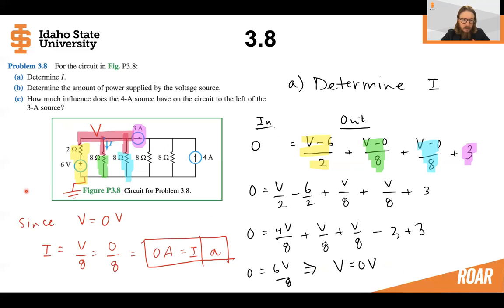Now, since V is equal to zero volts, we can see that the current I is also going to be equal to zero, zero amps. So for part A, the answer to this is that there is zero amps going through that branch.